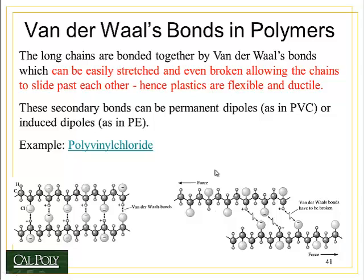Another good example of a secondary bond is something called the van der Waals bond, or VdWs. VdWs are very weak bonds, much weaker than even hydrogen bonds. Because of this, they can be easily stretched and even broken along the chains of molecules, allowing the molecules to slide past each other very easily. This is why polymers are so flexible and ductile.